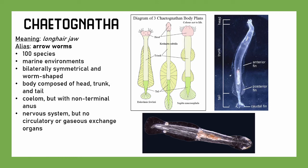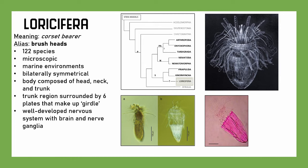Getting wilder and weirder, we have Loricifera — it means 'corset bearer.' They're known as brush heads, sometimes also called girdle bearers. There are 122 species, microscopic. They're bilaterally symmetrical, with a body composed of a head, neck, and trunk. The trunk region is surrounded by six plates that make up the girdle or corset. They have a surprisingly well-developed nervous system, brain, and nerve ganglia. They're probably most closely related to things like the mud dragons.